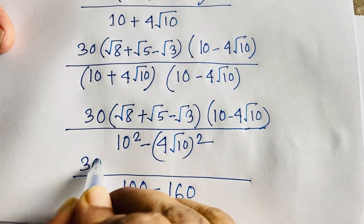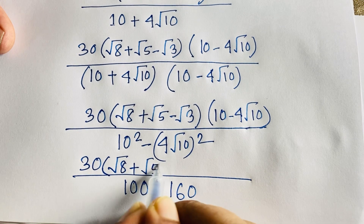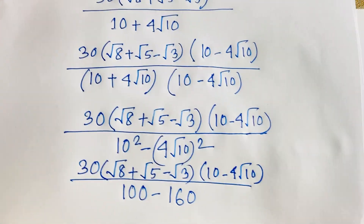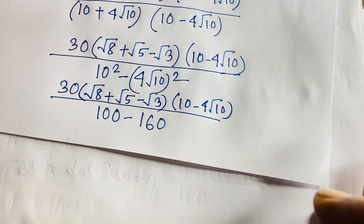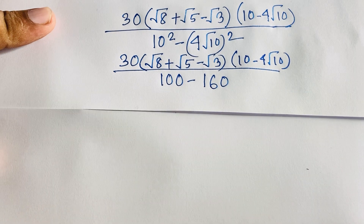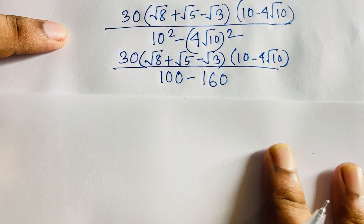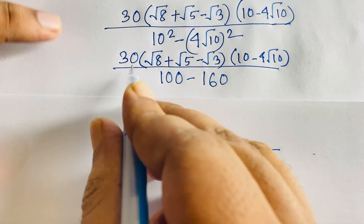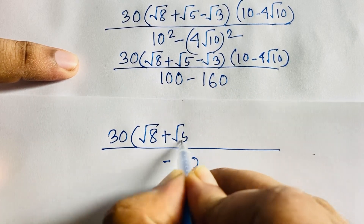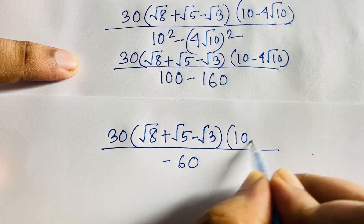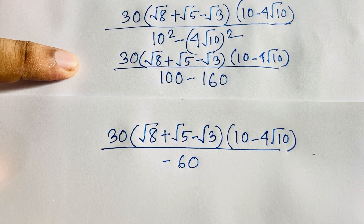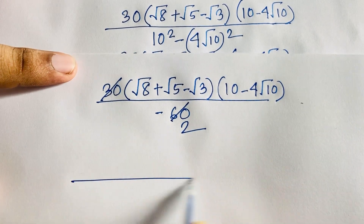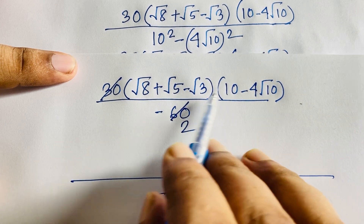So the denominator is −60, and the numerator is 30 times (√8 + √5 − √3) times (10 − 4√10). Dividing 30 by 60 gives us a factor of minus 2 out front.